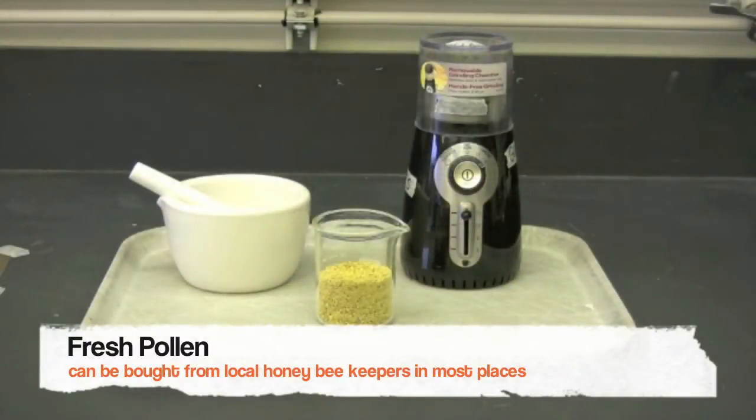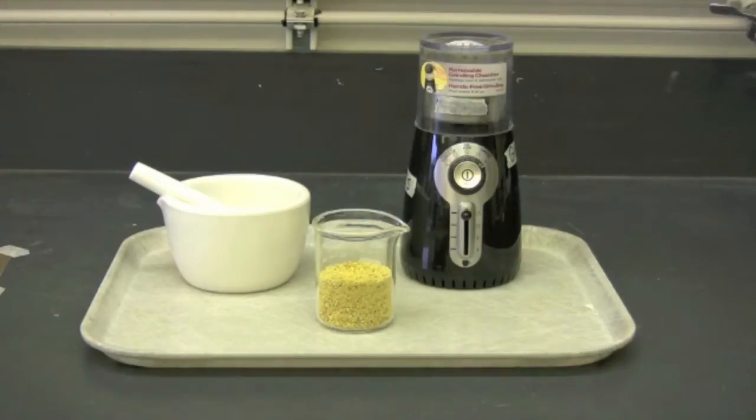You need to provide pollen to your queen by using methods which would mimic her natural ability in collecting and processing pollen in the wild. The first step is that you need to grind the pollen. You can do this by using either a mortar and pestle or a coffee grinder.